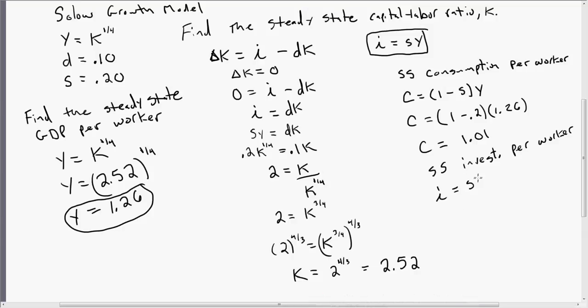S is 0.2. Y is 1.26. So investment per worker in the steady-state is equal to 0.25.